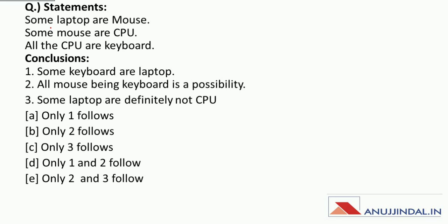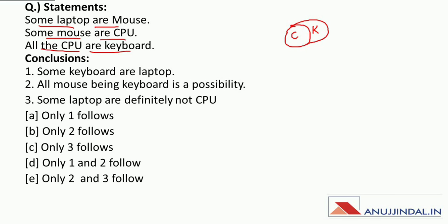Question number 1: In the statements it is given that some laptops are mouse, some mouse are CPU and all the CPU are keyboard. So now let us first draw the Venn diagram. All the CPU are keyboard, some mouse are CPU and some laptop are mouse. So this is the basic Venn diagram of the given statements.